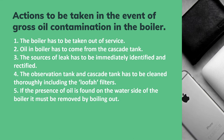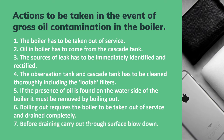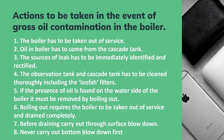If oil is found on the water side of the boiler, it must be removed by boiling out. Boiling out requires the boiler to be taken out of service and drained completely. For this, we have to drain the boiler completely and flush. Before draining, carry out a thorough surface blowdown. Never carry out bottom blowdown first, because doing so will cause the oil floating on the boiler water surface to form another layer.